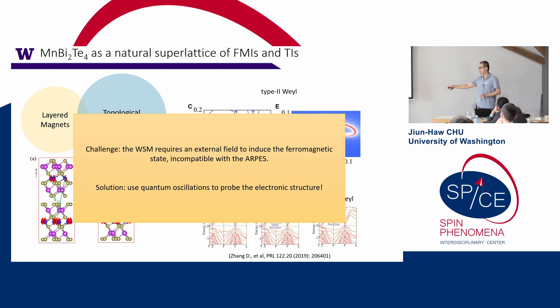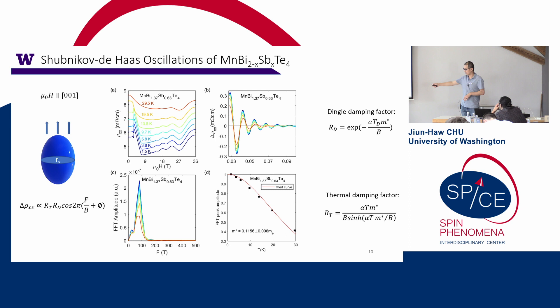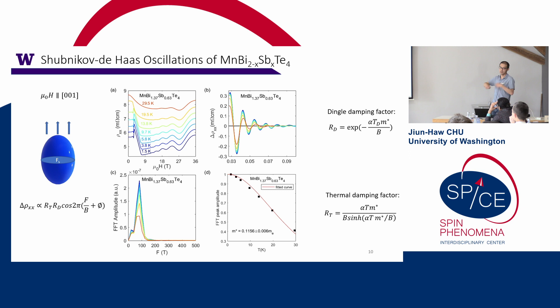Our solution is to use quantum oscillations to probe the electronic structure in the field-induced ferromagnetic phase. When you apply a magnetic field in a solid, you form Landau levels. As you sweep the magnetic field, the Landau level spacing changes, and with a fixed chemical potential you see a series of oscillations that tell you about the electronic structure and the size of the Fermi surface. These oscillations are periodic in 1/B, and the frequency corresponds to the area of the Fermi surface in 2D — or in 3D, to the extremal cross-sectional area of the Fermi surface projected along the magnetic field direction. You can also extract effective mass from the temperature dependence.